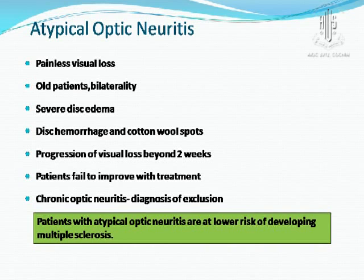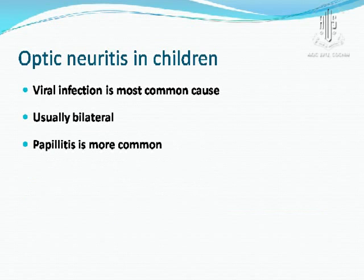If the typical features are not present, we call it atypical optic neuritis. Features of atypical optic neuritis include painless visual loss, bilateral involvement, severe disc edema, disc hemorrhages, cotton wool spots, and progression of visual loss continuing after 2 weeks with failure to improve with treatment. Patients with atypical optic neuritis are at lesser risk of having multiple sclerosis. In children, optic neuritis usually follows viral infections, is typically bilateral, and presents more as papillitis.